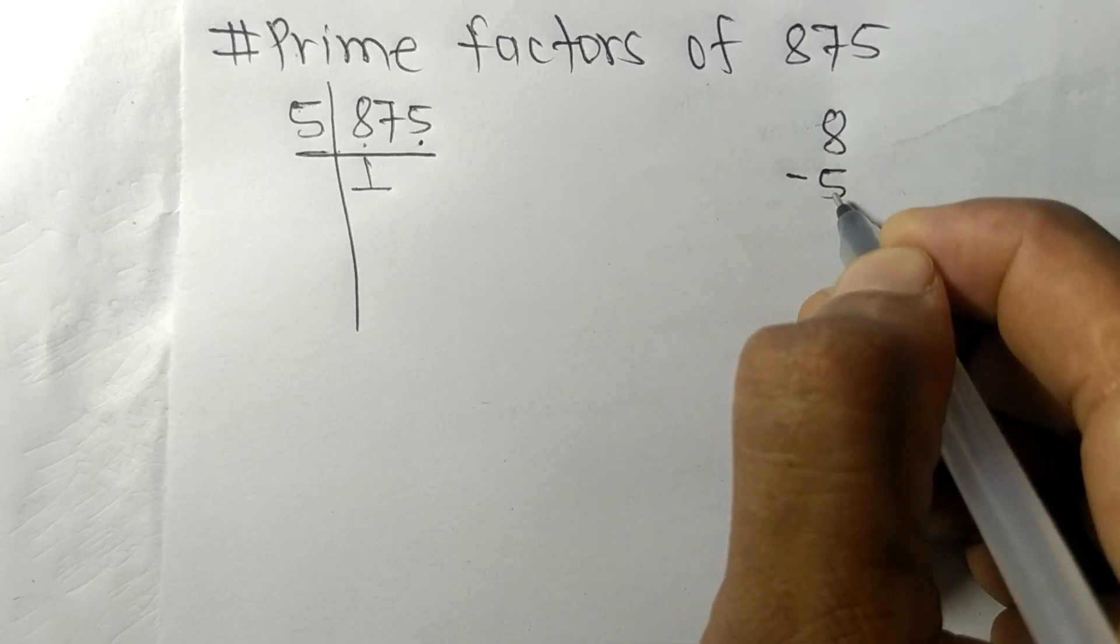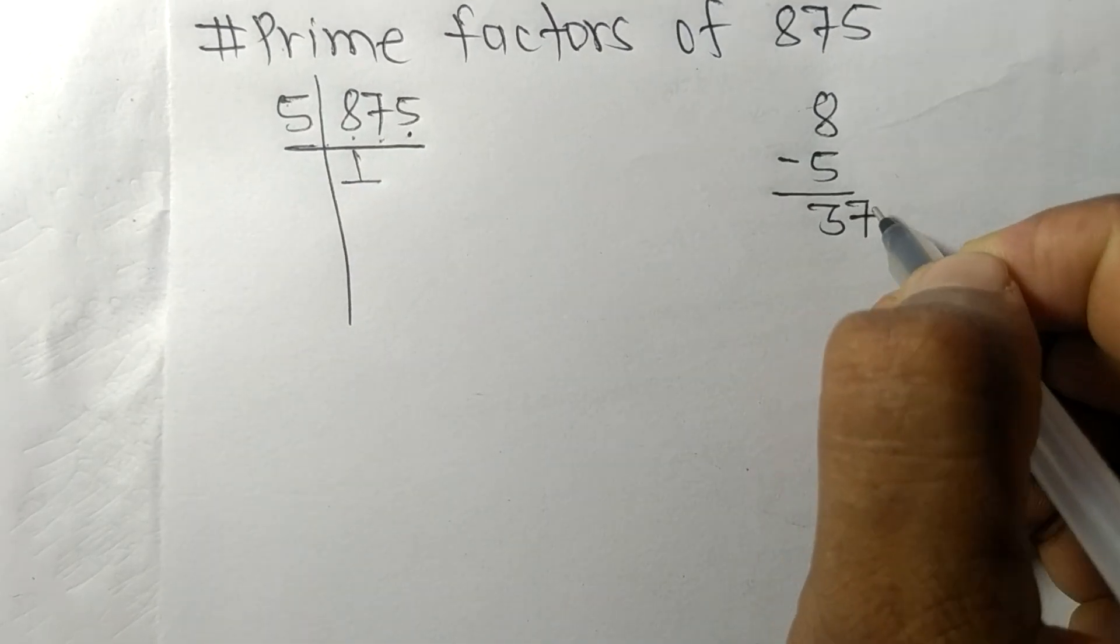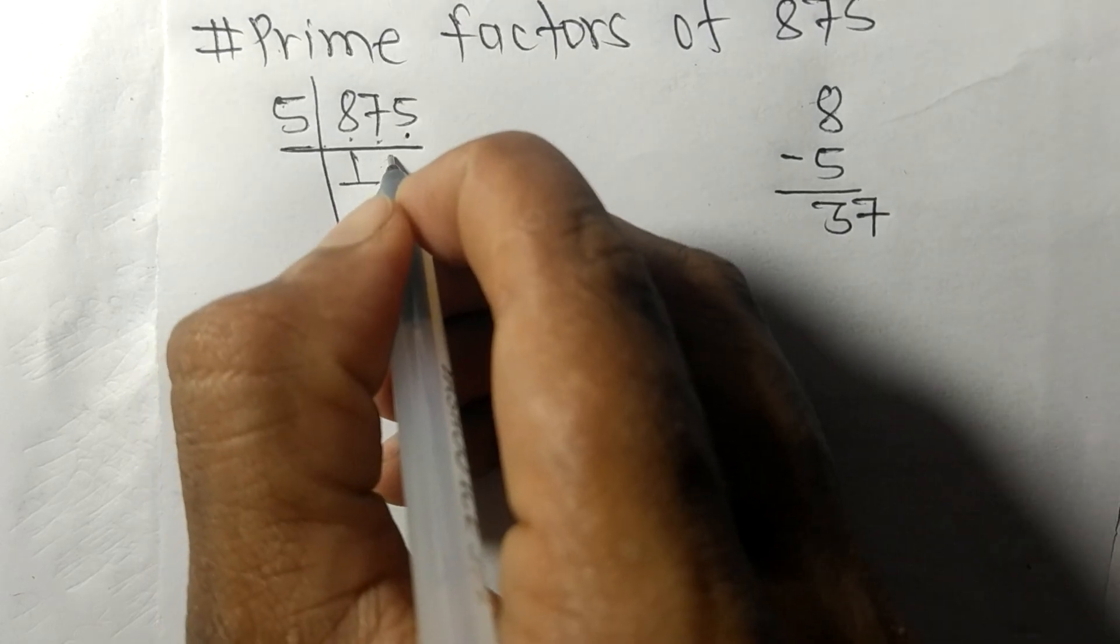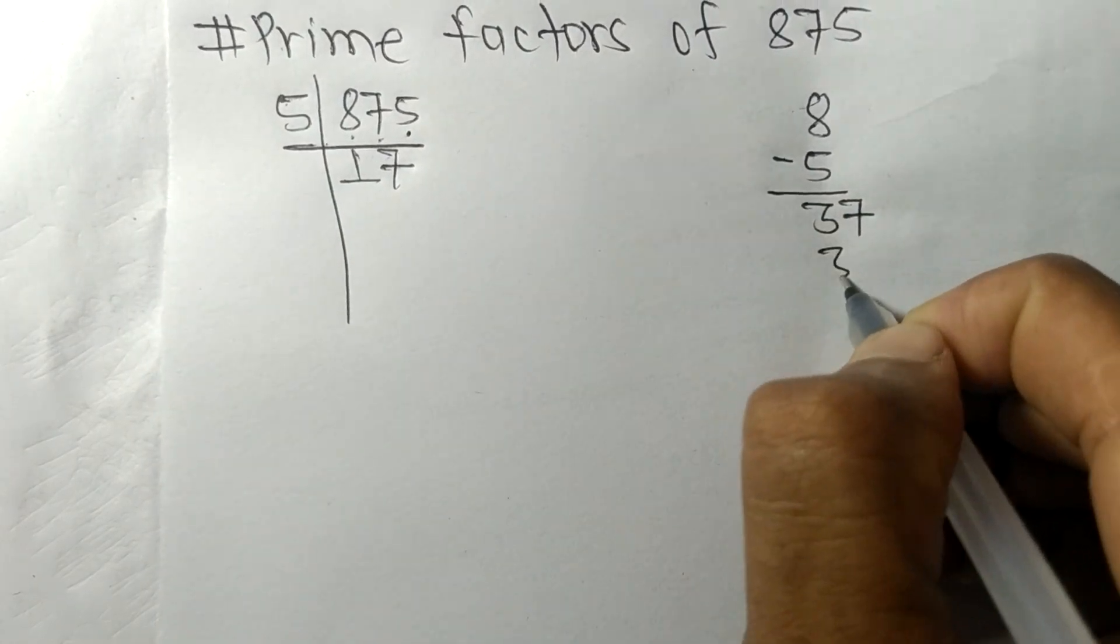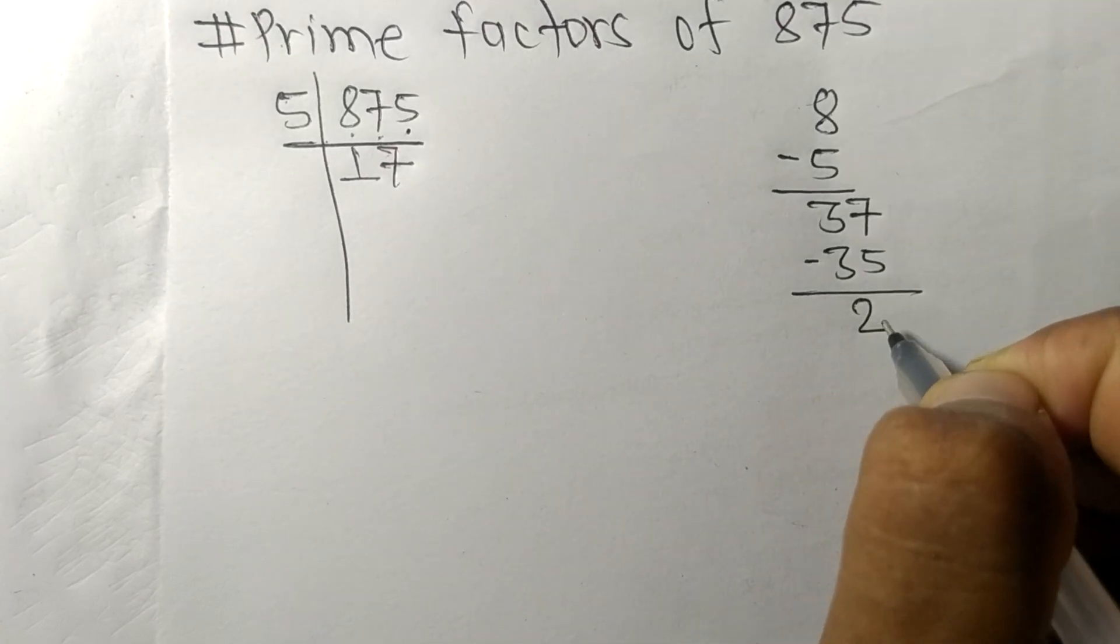On subtracting we get 3, and this 7, 37. So 5 times 7 equals 35. On subtracting we get 2.